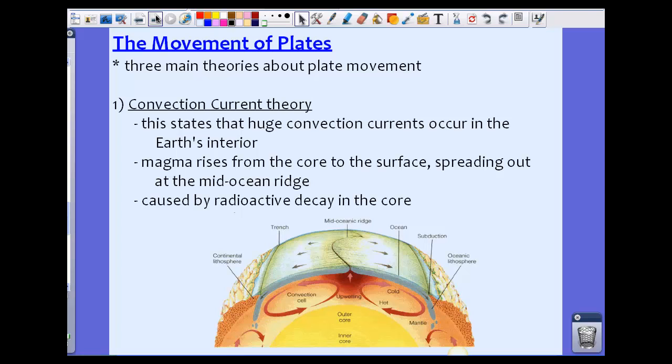This states that huge convection currents occur in the Earth's interior. We've discussed how the convection cells work - hotter magma rises up, and as it cools, it sinks down towards the core, towards the center. This drives the plate movement in the direction of the convection currents. Notice the one on the left drives this plate over to the left, where the one on the right drives it to the right. It depends on the convection current.